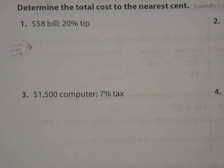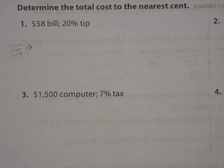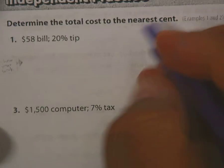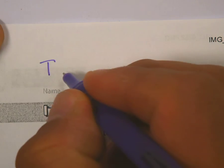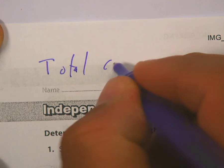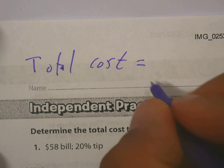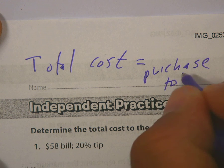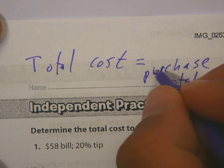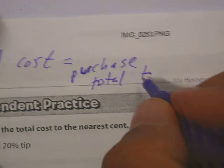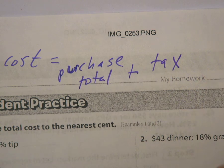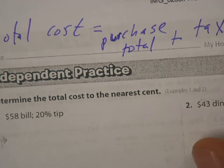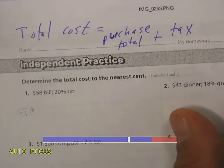I'm going to help you look into some of these problems. When we want to determine the total cost, total cost equals purchase total plus tax. So just remember: total cost equals purchase total plus tax.